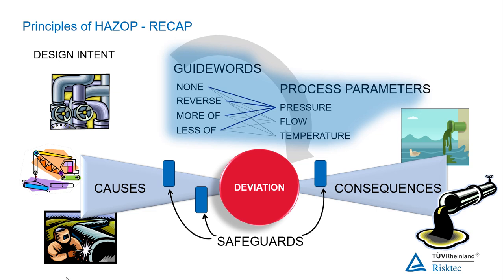What safeguards exist that may prevent or mitigate against the hazard occurring in the first place? And what corrective actions can be applied to mitigate against the hazard progressing through to the worst possible consequence?